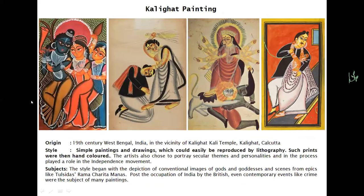Then you have the Kalighat style. What makes it different is that it was the first folk art that could be reproduced by printing — outlines were drawn, copies made using lithography, and the prints were hand-colored. Initially it started with Kali and the temple surroundings as subject, but later it showed human emotions in normal daily life. During the independence struggle, freedom fighters and their stories were depicted in Kalighat paintings. This evolved relatively late — around the 19th century in West Bengal.